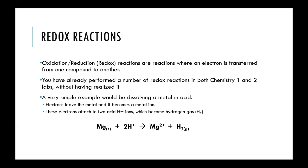One of the simplest redox chemical reactions is dissolving a metal in an acid. In this example, solid magnesium reacts with two H⁺ acid ions, generating the magnesium 2+ ion and hydrogen gas. The magnesium loses electrons and the hydrogen gains electrons — the electrons transfer from one reagent to the other, swapping positions.